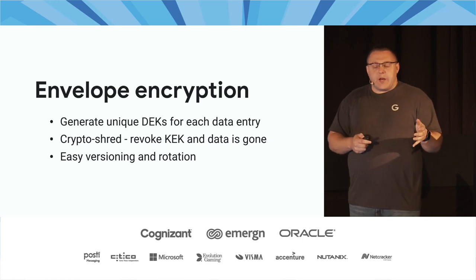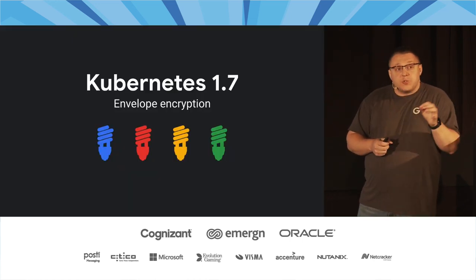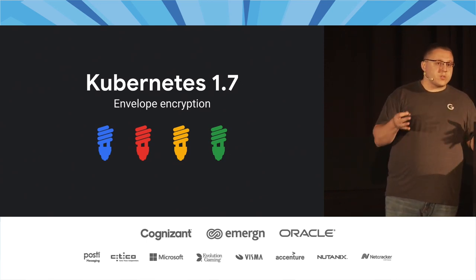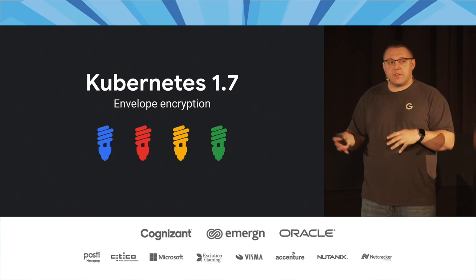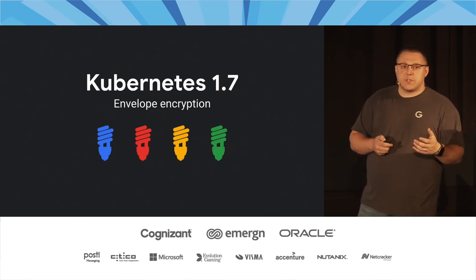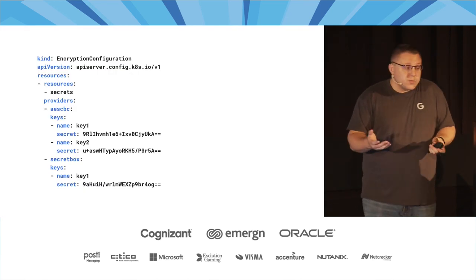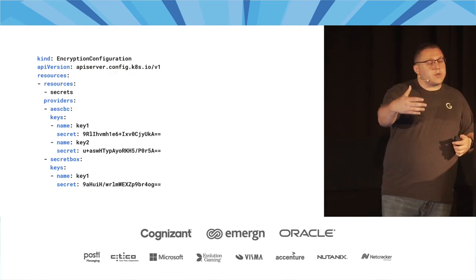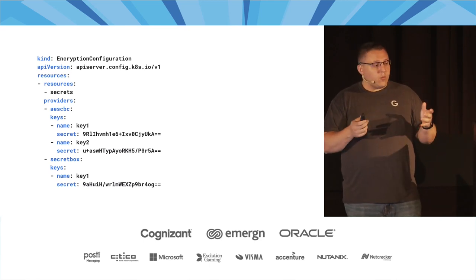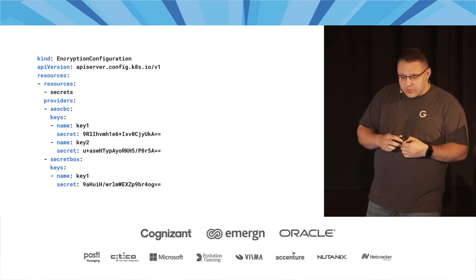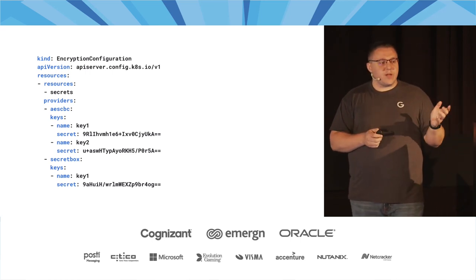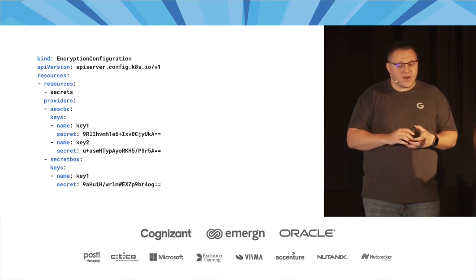So what does this have to do with Kubernetes? Kubernetes 1.7 actually introduced envelope encryption into the secrets envelope provider. As a Kubernetes administrator, you create a YAML file — because we're all YAML engineers now — called an encryption configuration.